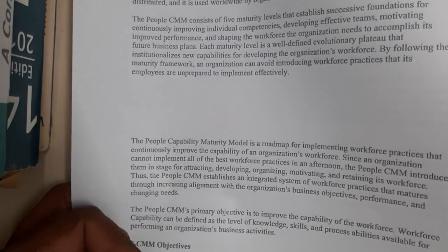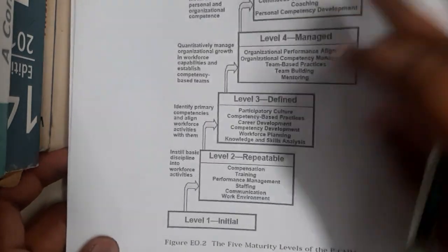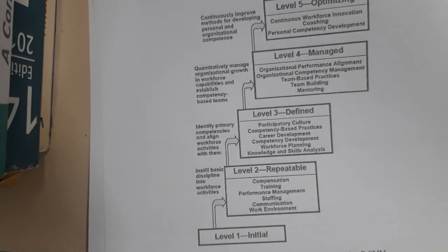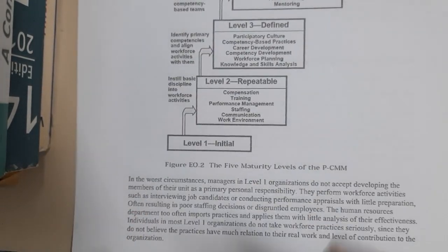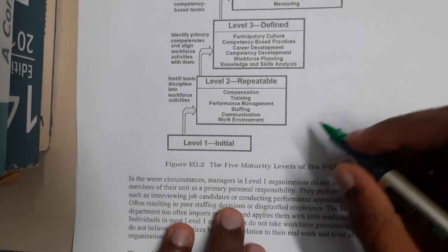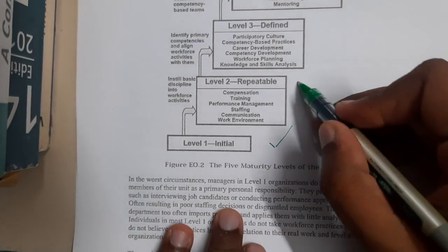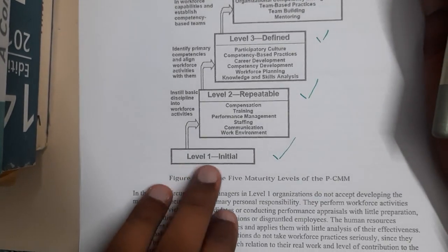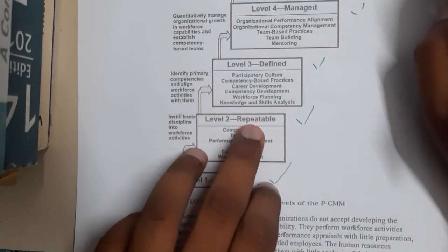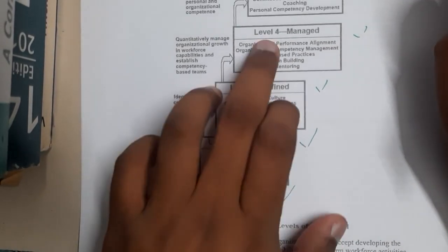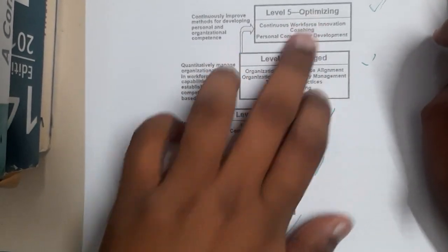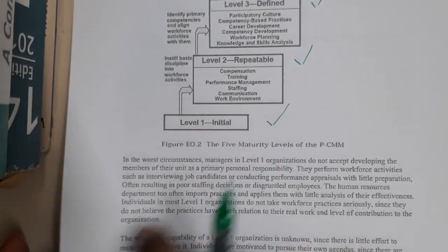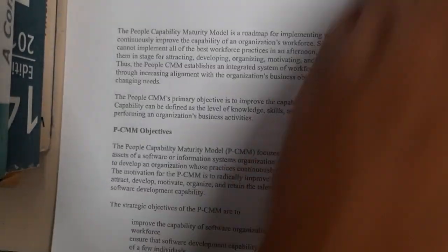I'll go directly through the model and explain the overview, because reading every single line would take 10 to 15 minutes for a small topic. There are the same five stages as in CMM, and the names are exactly the same: Level 1 is Initial, Level 2 is Repeatable, Level 3 is Defined, Level 4 is Managed, and Level 5 is Optimized.